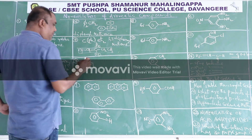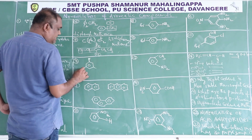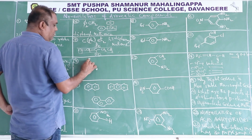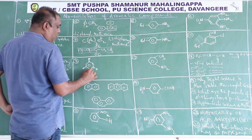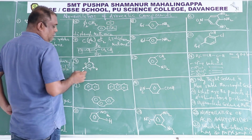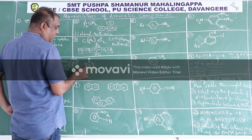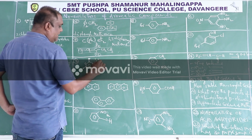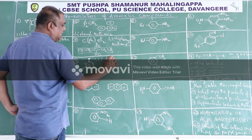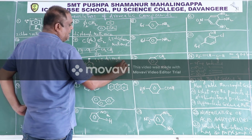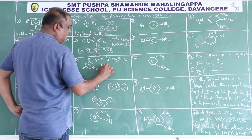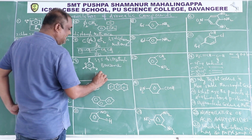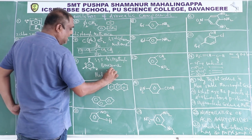Here there are three methyl groups. Numbering 1, 2, 3, 4, 5, 6: the methyl groups are at positions 1, 3, and 5, giving 1,3,5-trimethylbenzene. It is also commonly called mesitylene.